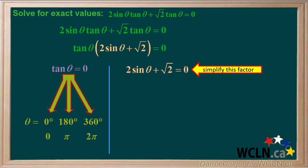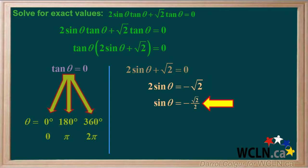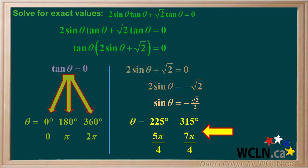Now we'll go to the factor on the right side, 2 sine theta plus root 2 equals 0, and simplify it. Subtracting root 2 from both sides gives us 2 sine theta equals negative root 2, so sine theta equals negative root 2 over 2. Two angles that have an exact sine of negative root 2 over 2 are 225 degrees, which is 5 pi over 4 radians, and 315 degrees, which is 7 pi over 4 radians.